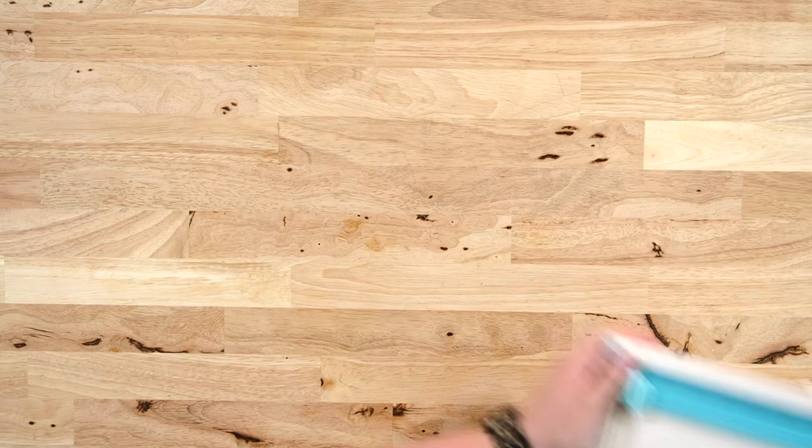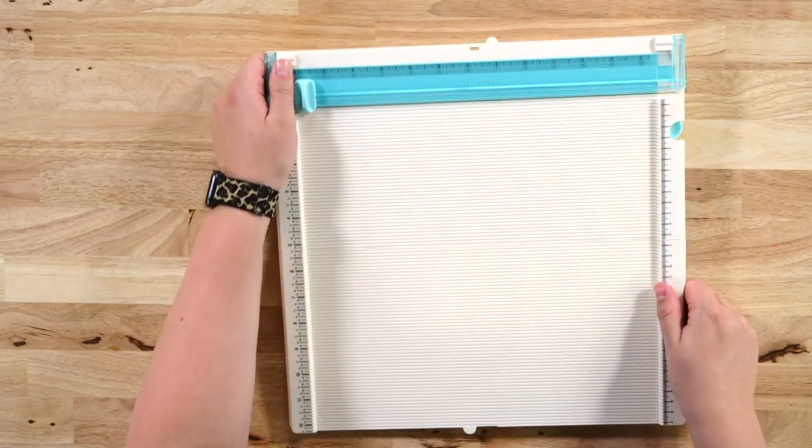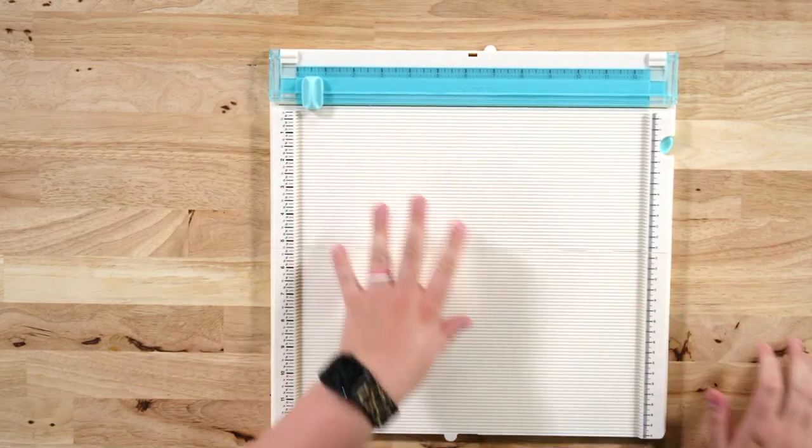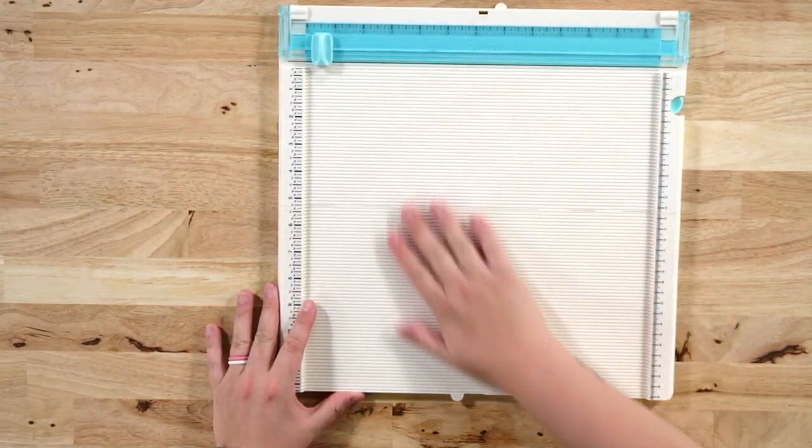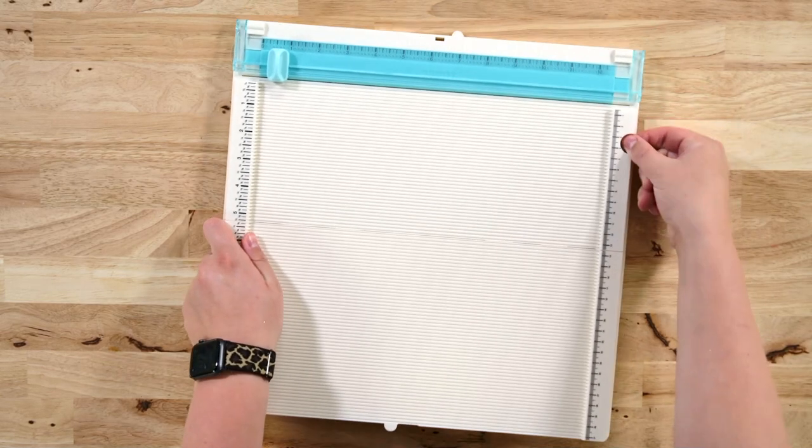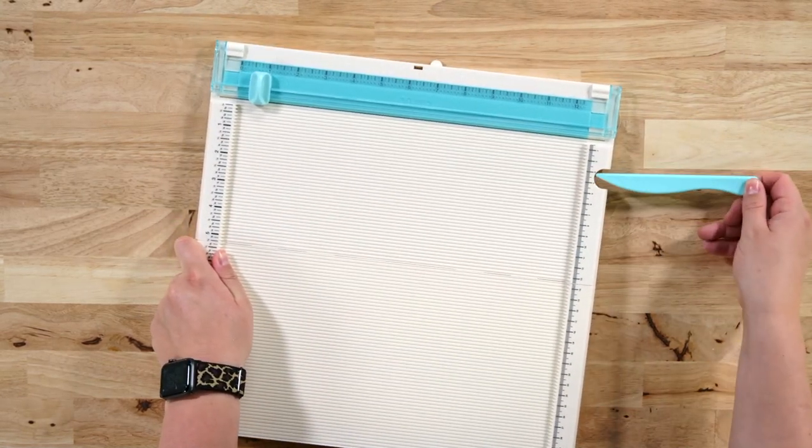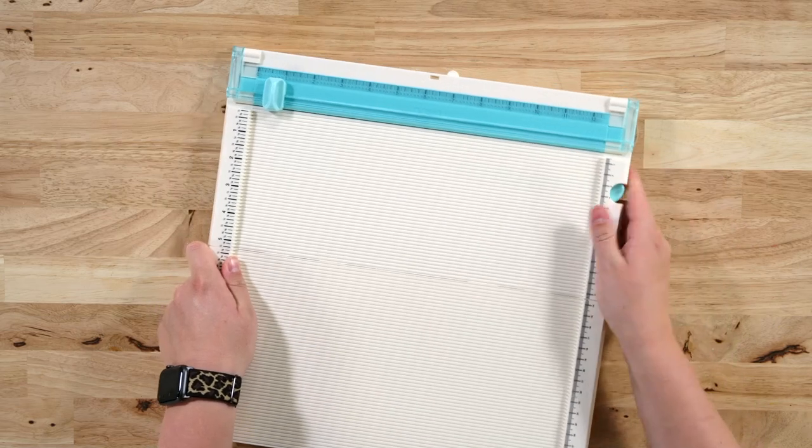For all the paper crafters out there, this We Are Memory Keeper scoreboard and paper trimmer is where it's at. It's nice and big. It comes with a built-in bone folder and the scoreboard is really nice to use.